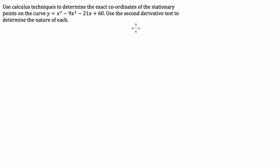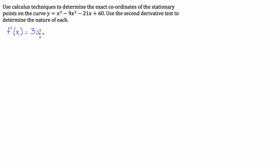Calculus techniques is just code for: let's differentiate this function and use that derivative to find the turning points. I'm going to use f prime notation — I find it a lot easier to understand. So f prime of x is going to equal 3x squared minus 18x minus 21.